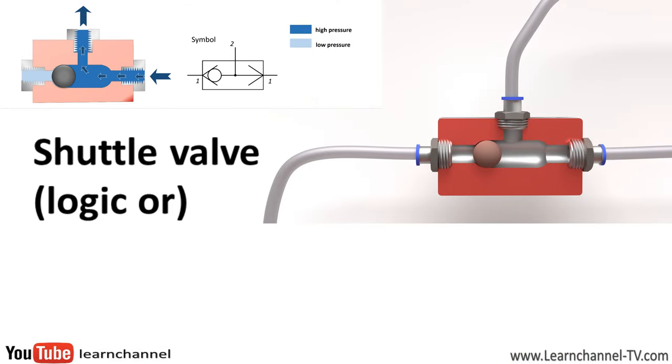At this point, we should also mention the logic OR valve, also called a shuttle valve. As the name suggests, the operating pressure is switched through as soon as one of the inputs is applied to the pressure. If both inputs are pressurized, the signal that arrives first stays switched through the output.